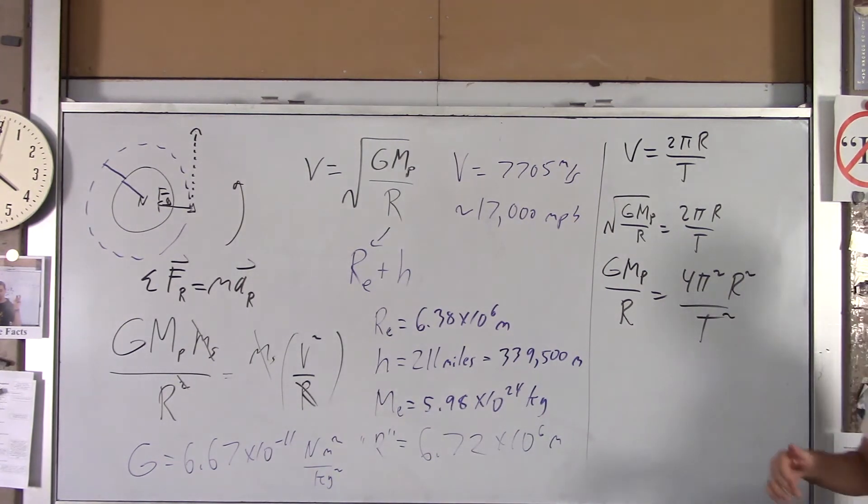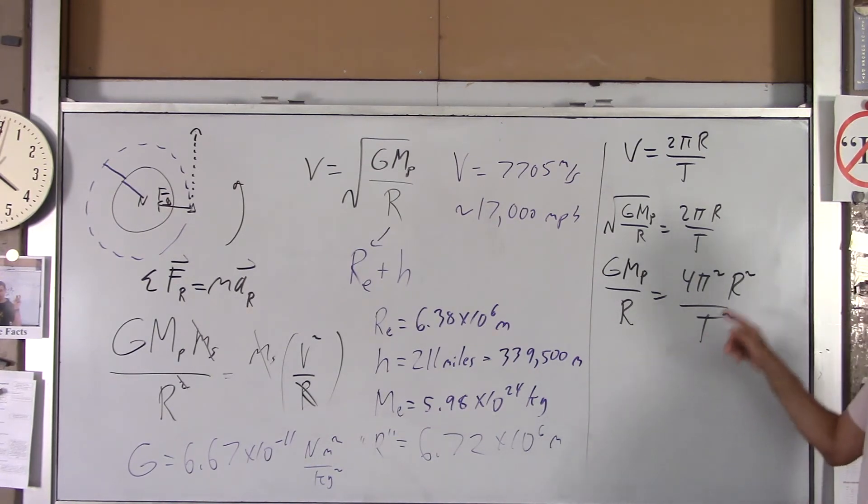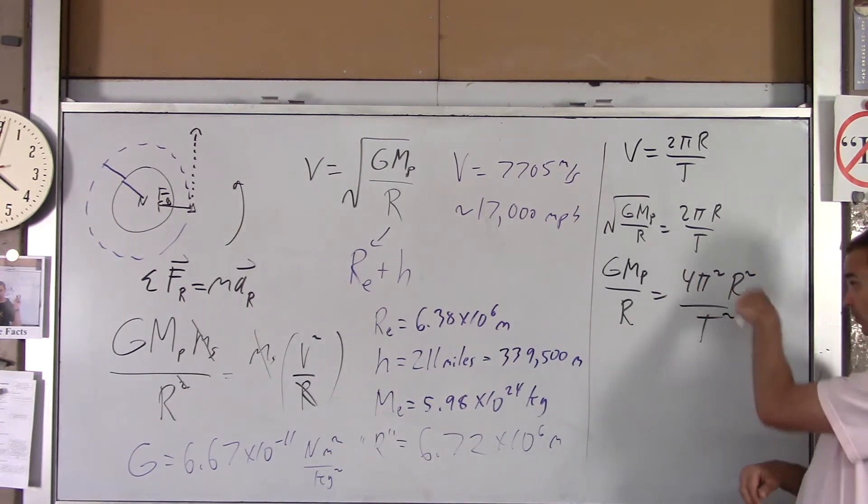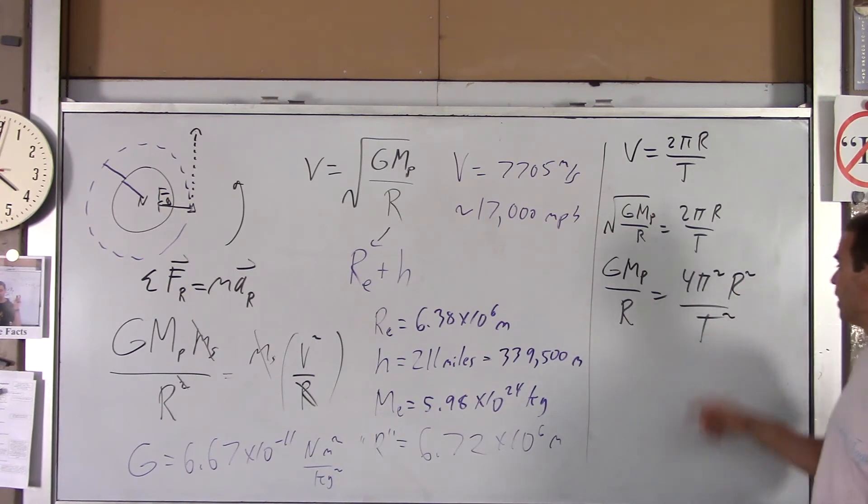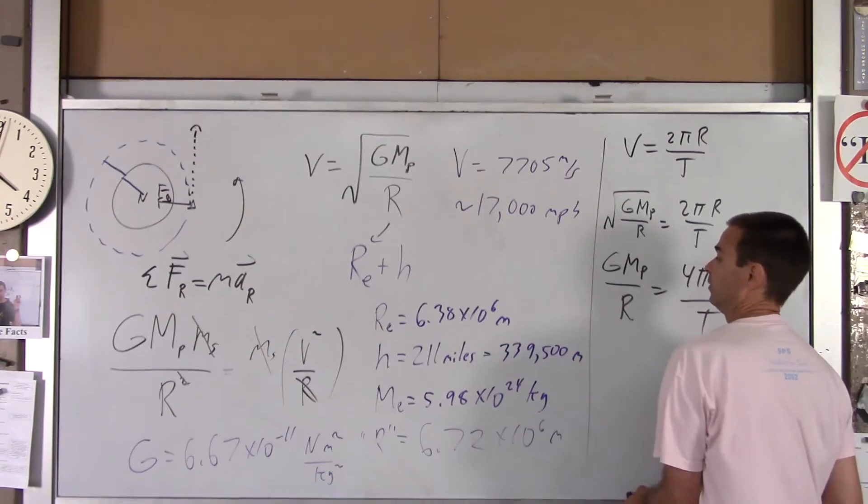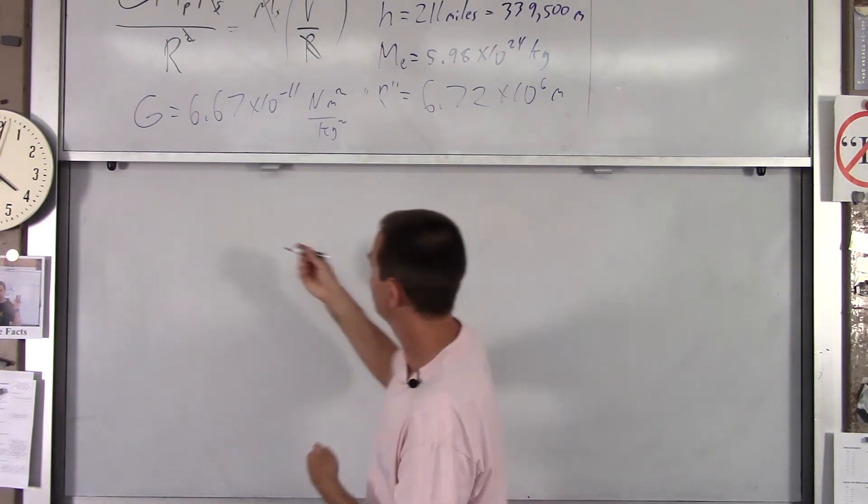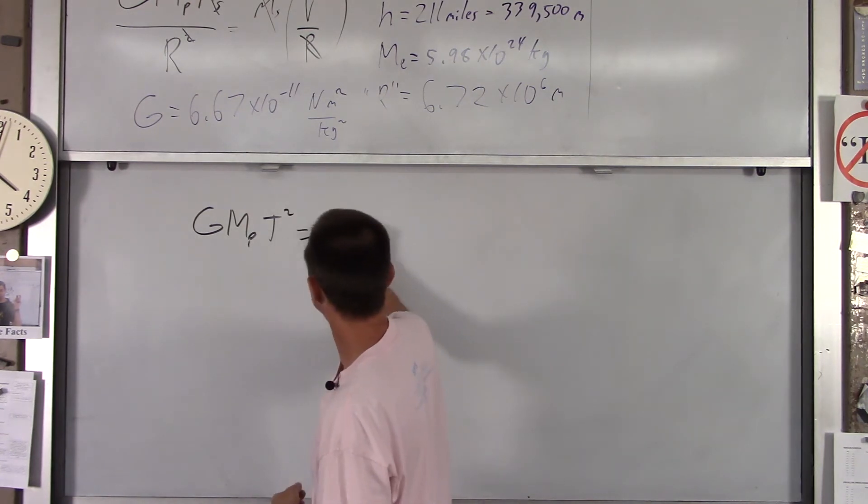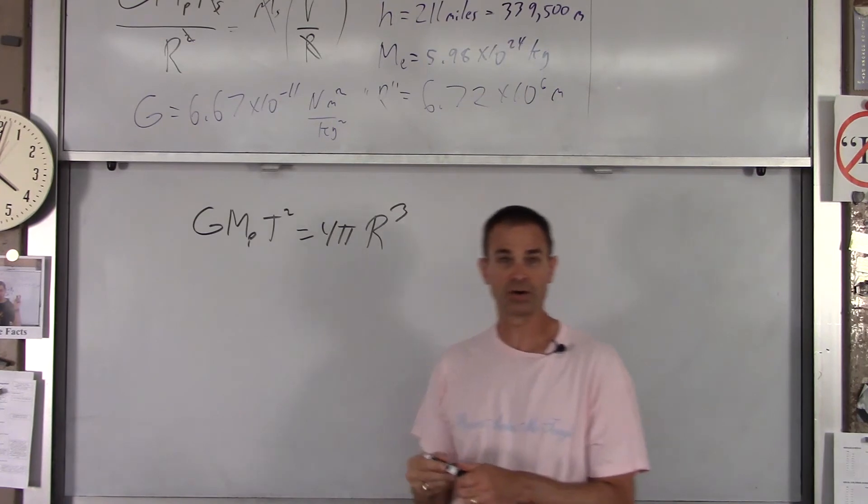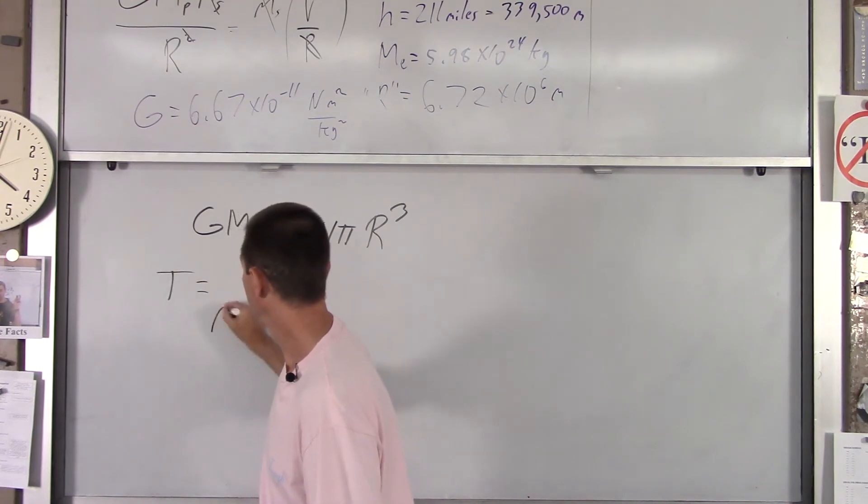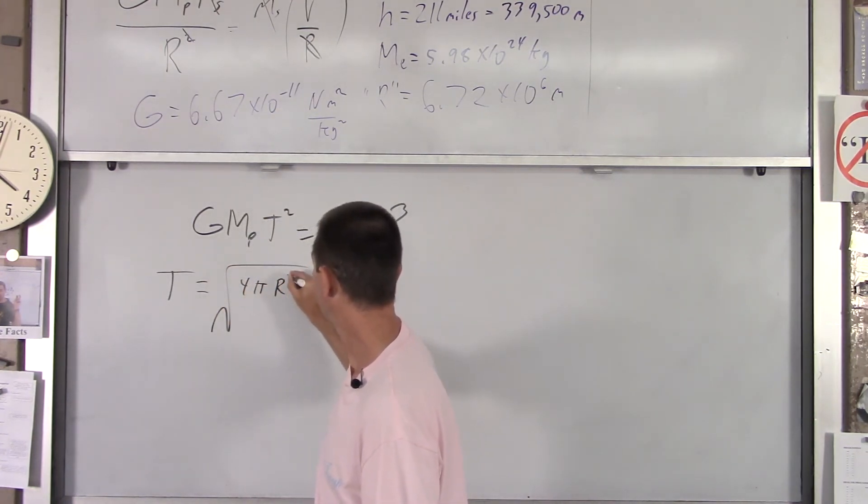So, first thing I'm going to do is I'm going to square everything, get rid of my square root. So, we got g mass of the planet over r equals 4 pi squared r squared over t squared. Now, I'm making a quick note here. Common algebraic mistake. People will say, I'll cancel one of the r's. Can't do that. If this r squared were over there, or this r were over here, well, now you can do it. But they're on opposite sides of the equation. You actually have to cross multiply here. So, we're going to cross multiply.